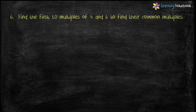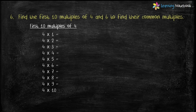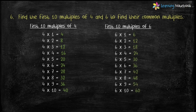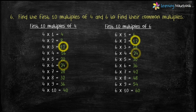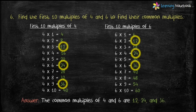Let's solve a question: find the first ten multiples of four and six to find their common multiples. First we find the first ten multiples of both four and six by multiplying each by 1 through 10. The first common multiple of four and six is 12, the second common multiple is 24, and the third is 36. Therefore the common multiples of four and six are 12, 24, and 36.